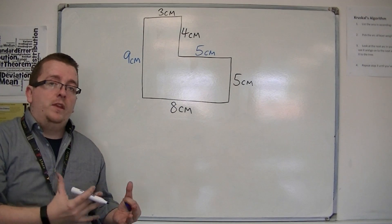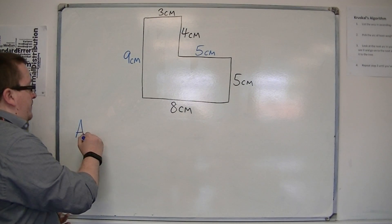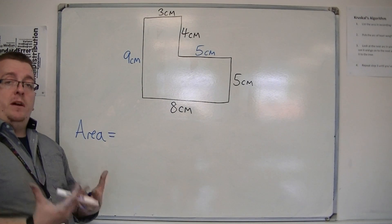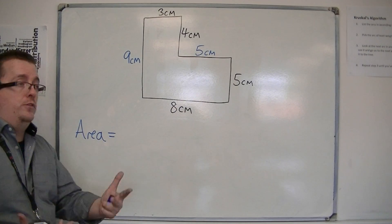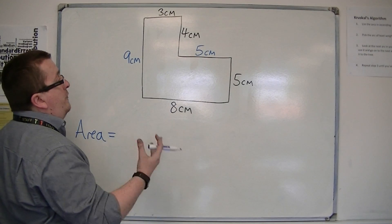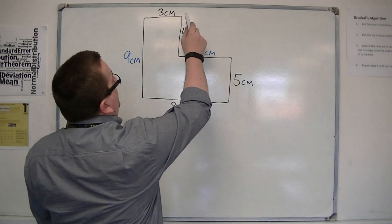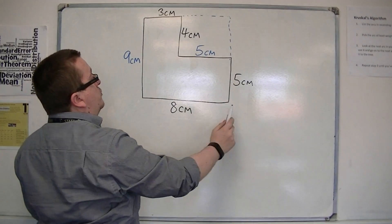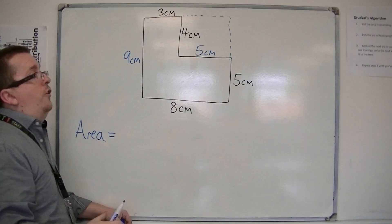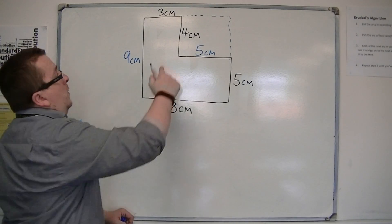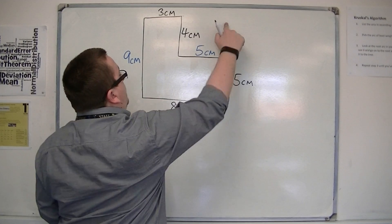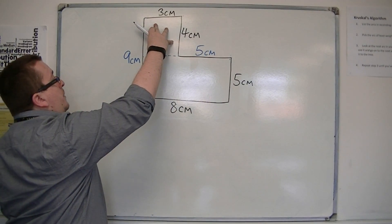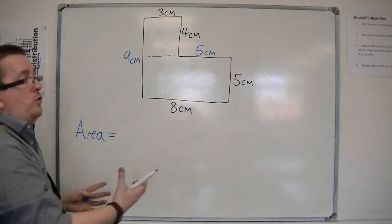Once we've done that, if you want to find the area, you need to split the shape up into shapes whose area you can calculate. You can split it in different ways — for example, find the area of the whole shape and take away the area of that rectangle. Or you might split it another way, find the area of one part, add it to the area of another, and that gives you the area of the whole shape.